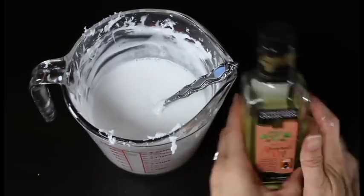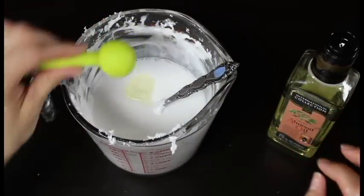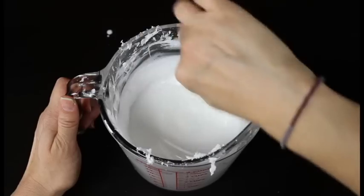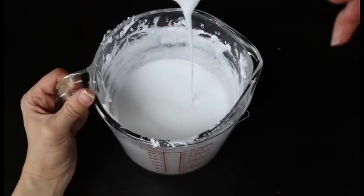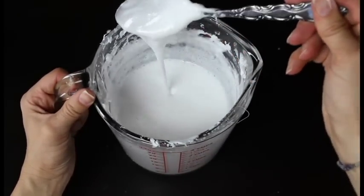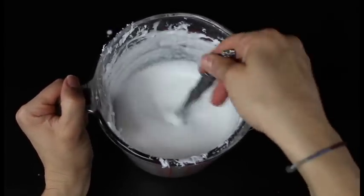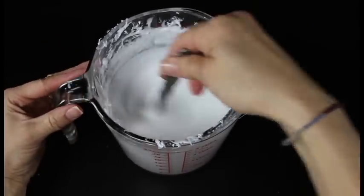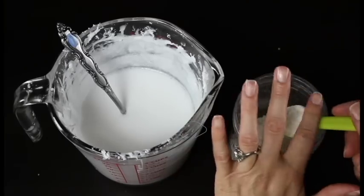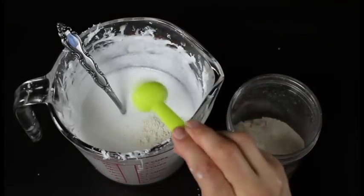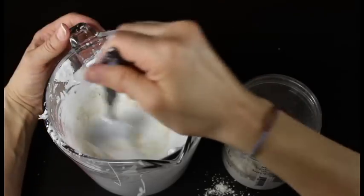The next thing you're going to do is grab your sweet almond oil and measure in one teaspoon of the oil. This is just going to make our soap more softening. Almond oil is so beautiful for your skin. It makes it very smooth and soft. You don't want to add too much of any extra oils because we don't want it to affect the lather of our soap. But one teaspoon is a perfect amount to add.